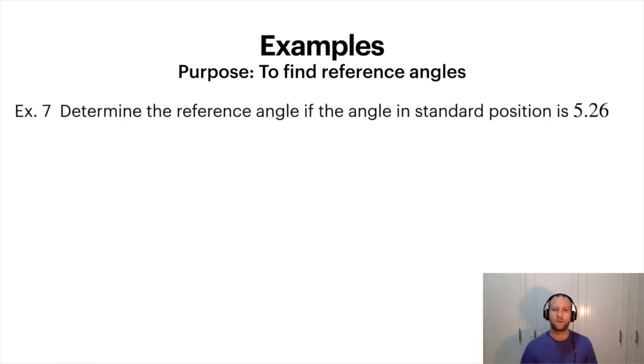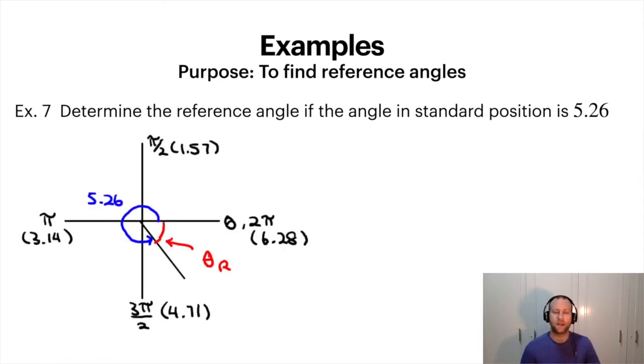So determine the reference angle if the angle in standard position is 5.26. So here's our angle actually drawn out. This is why 4.1 is important. Notice the reference angle is the red line here between the x-axis and the terminal arm. So to get that we go 2π minus my standard position angle, and we get the reference angle is 1.02 radians.